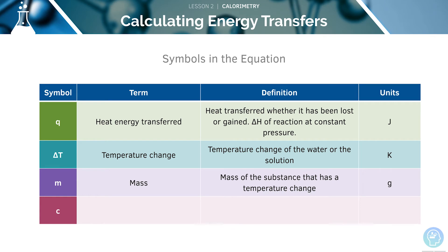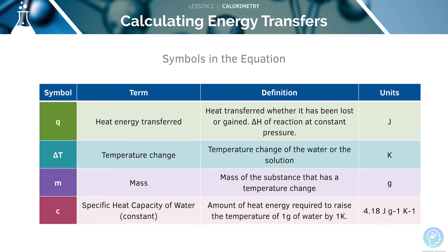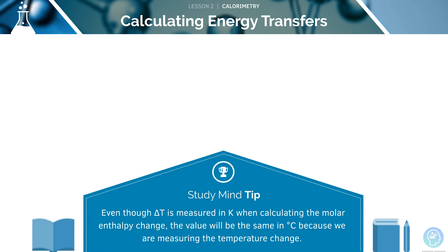Finally, we'll look at the term C, which stands for specific heat capacity. This is the amount of energy needed to raise the temperature of one gram of water by one Kelvin. The units will be joules per gram per Kelvin. Note that even though delta T is measured in Kelvin, when calculating the molar enthalpy change, the value will be the same in degrees Celsius, because we're simply measuring the change in temperature.